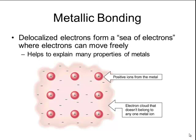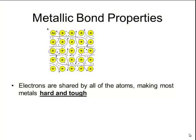This delocalization of electrons helps to explain many of the different properties of metals. Because these electrons are shared by all of the atoms, there's a strong attractive force between those positive cations and that sea of electrons, making most metals on the periodic table hard and tough.